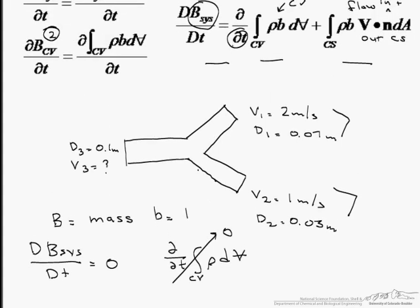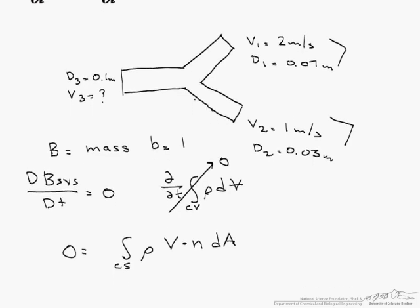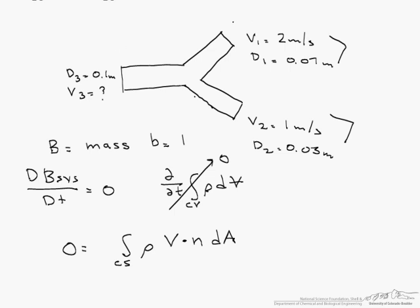and let's go back to here, the integral over all of our control systems of rho, remember little b is 1, v which is a velocity, dot n, so that's the dot product of the velocity and the unit normal coming from the control surface times our differential area. So how many control surfaces do we have here? We have 1, 2, and 3. So we are going to have to set up 3 separate integrals looking at all 3 of those control surfaces.